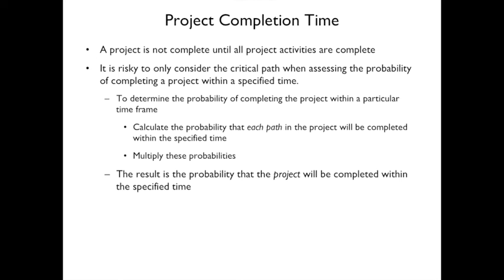A project is not complete until all project activities are complete, so it's risky to only consider the critical path — because if you focus only on it, something else gets delayed and becomes the critical path. To determine the probability of completing within a particular time frame, calculate the probability each path will be completed within the specified time and multiply these probabilities. The result is the overall probability the project will be completed in time.